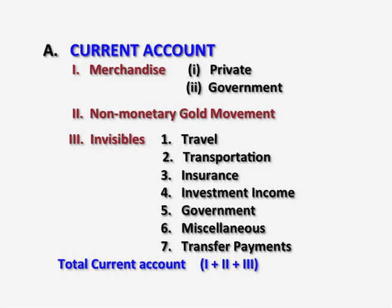Non-monetary gold movement means it is not involved with any kind of gold movement. The third item is invisibles, which indicates non-tangible or intangible items. In the current account, we have both income as well as expenditure. Income means when we are exporting goods or services to other countries, that will result in income. When we import, we have to pay for those things, which results in the outflow of currency.